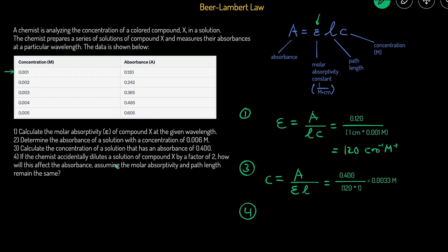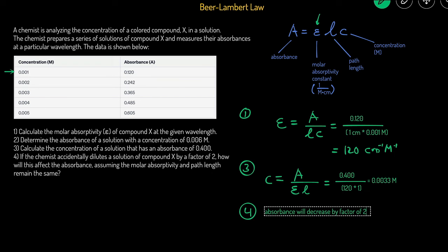For question four, if the chemist accidentally dilutes the solution of compound X by a factor of two, how will this affect absorbance? Assuming E and L remain the same, A is directly proportional to C. Since we're halving the concentration by diluting, the absorbance will also be halved — it decreases by a factor of two. For these types of questions involving molarity, absorbance, or molar absorptivity, just use A = ELC, with L typically equal to 1 unless otherwise given.